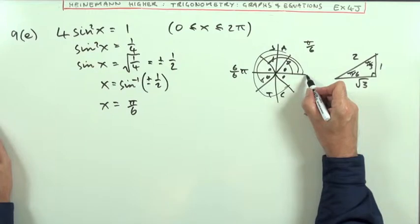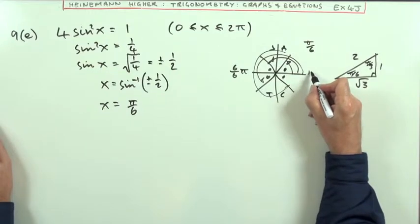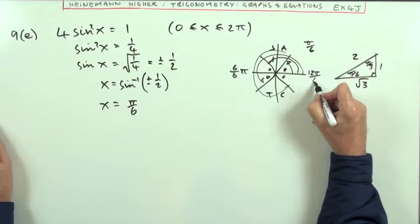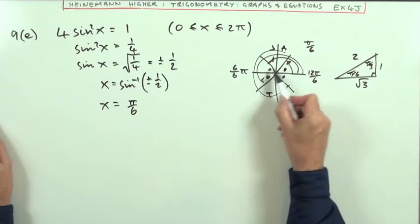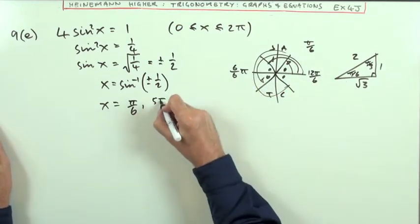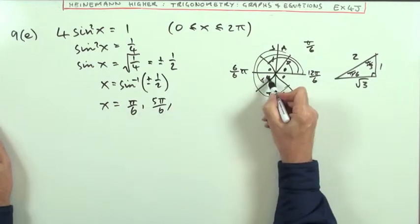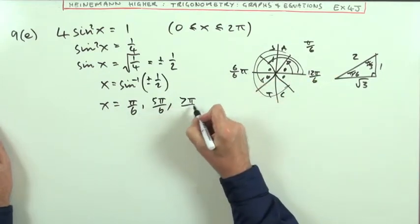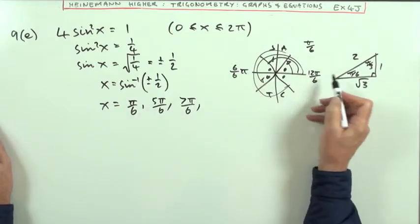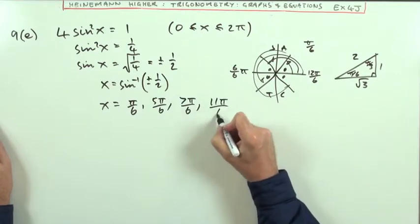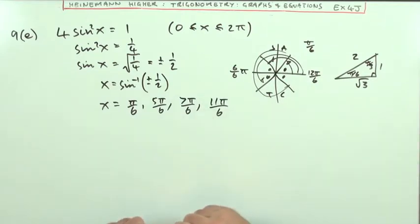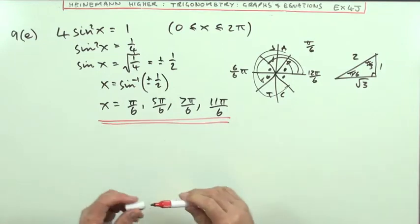And on this side here, when I get back to 0, 2π is the same as 12π upon 6. Let's put them all to sixths. So I've got one short of it, 5π upon 6. One beyond it, 7π upon 6. And one short of the 12, 11π upon 6. Those would be the four answers you would have. That's E.